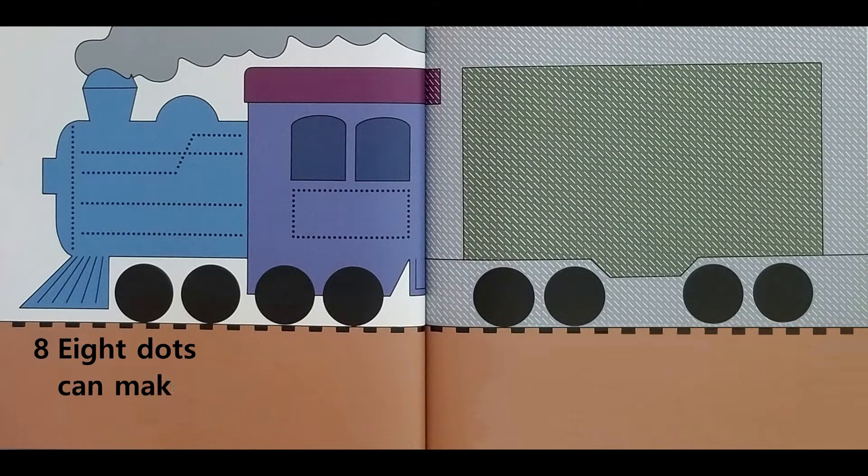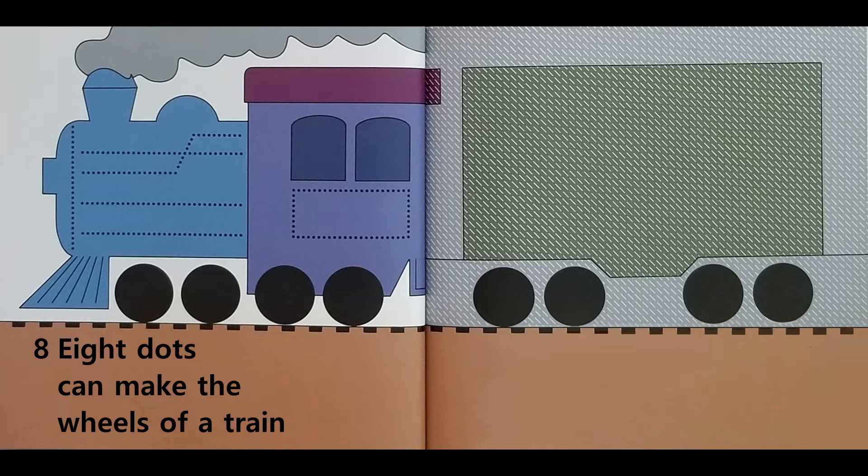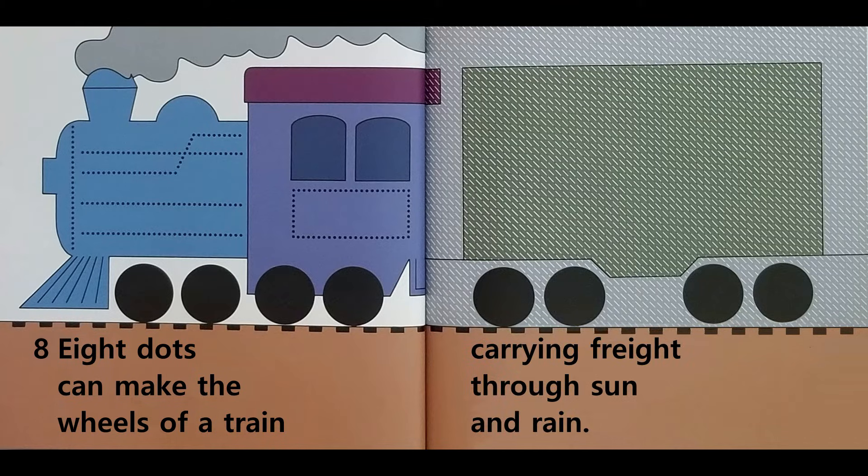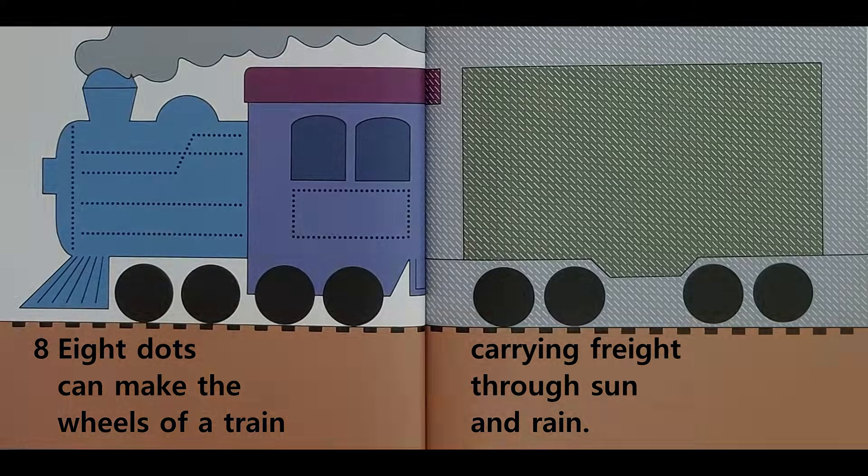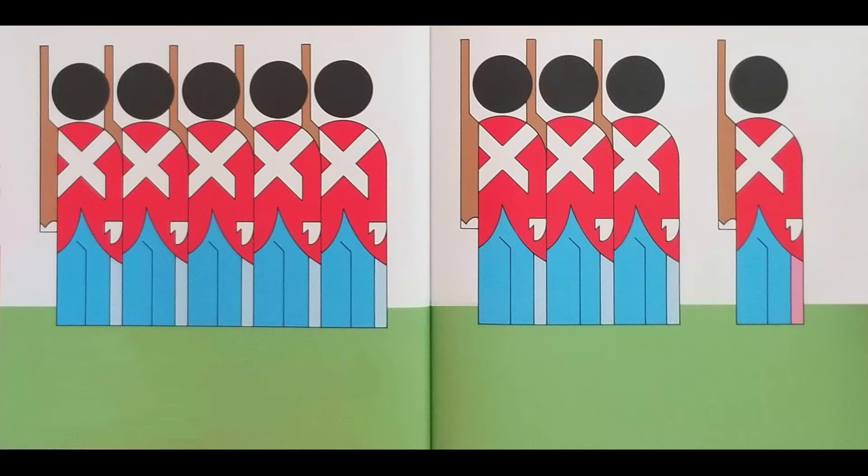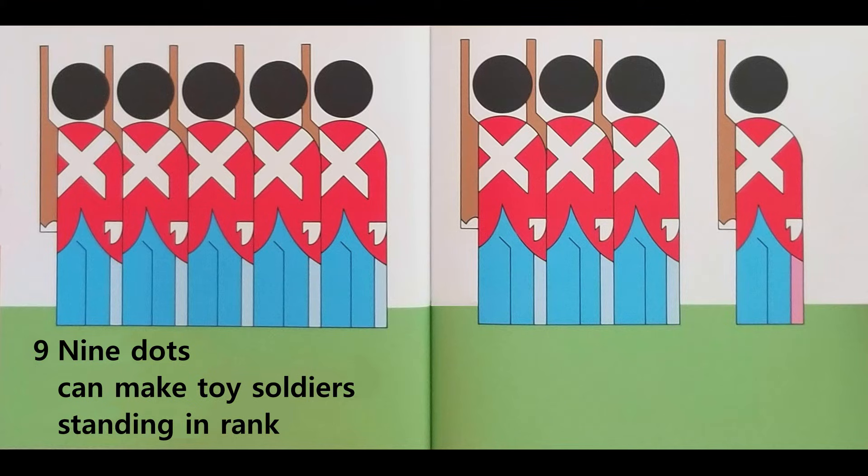Eight dots can make the wheels of a train carrying freight through sun and rain. Nine dots can make toy soldiers standing in rank.